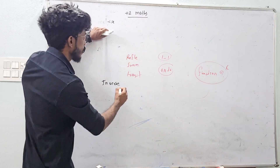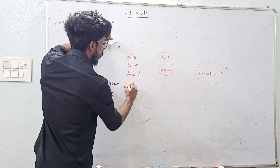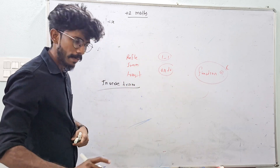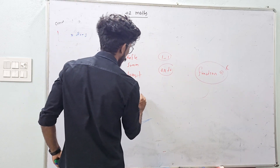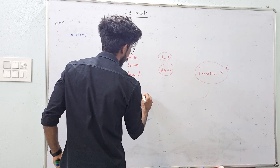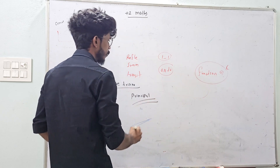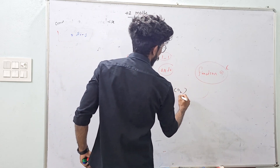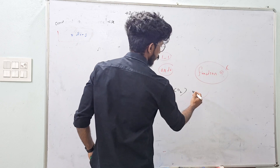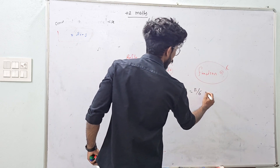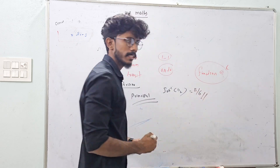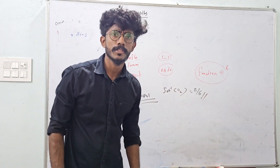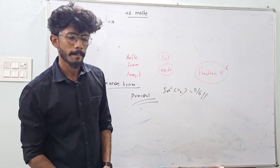Next, Inverse Trigonometry. In basic principal values — study the principal values. For example, what is sine inverse of 1/2? It is nothing but π/6. We'll study the equation.